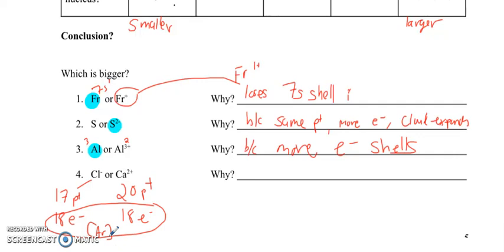So which one will be smaller? Which one will be bigger? Now it's going to be all about attraction. So calcium, 20 protons, more attraction. So if there is more attraction, what does that mean? That means the nucleus pulls in harder on the cloud, shrinks the cloud. So if there's more attraction, it is going to be smaller.